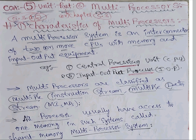Fifth unit, third chapter — Multiprocessors. Multi means many, as I already told you in my previous video. Many processors: P1, P2, P3.